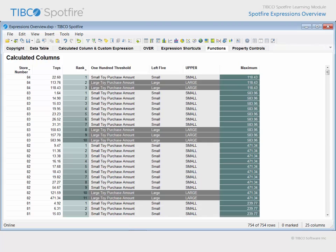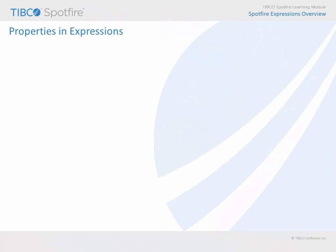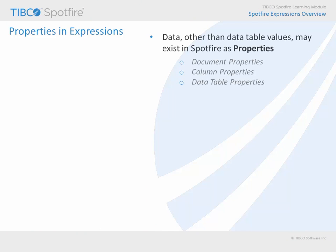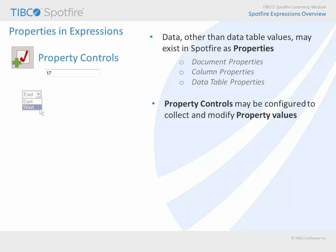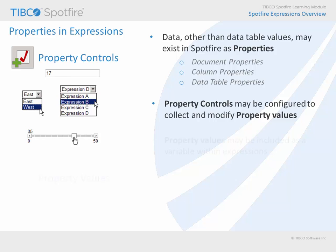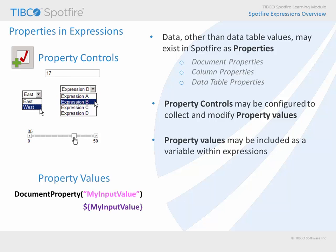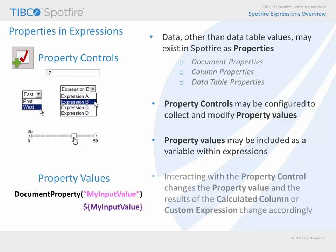While much of the data which you will handle within the Spotfire analysis environment exists within the underlying data tables, values may also exist in the analysis document as properties. These may be stored as document properties, column properties, or data table properties. And you can configure property controls in text areas which are used to enter and edit these property values. Once defined and collected, the property value may be included as a variable within an expression. Thus, interacting with the property controls to change the property values will change the result of calculated columns or custom expressions.